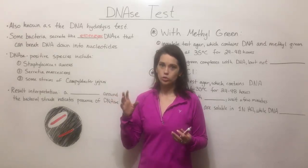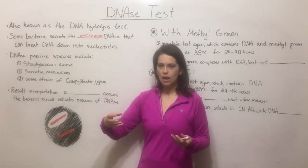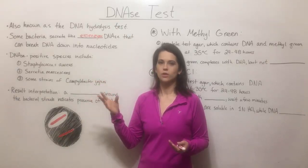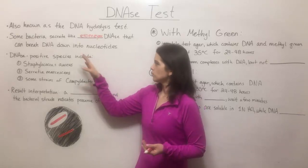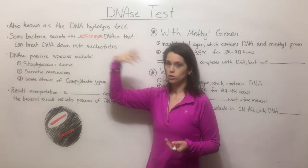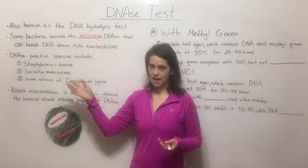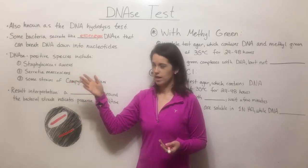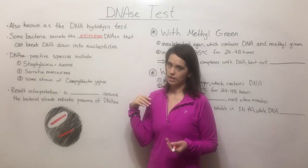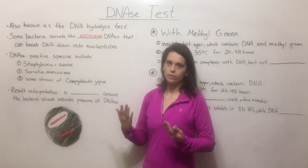DNA is typically too large to cross the membrane by itself, but there are transporter proteins for individual nucleotides. So some bacteria can produce this exoenzyme DNase, secrete it outside of themselves, where it can break down DNA that's in the environment, and then that bacteria can use their transporter proteins to bring in the resulting nucleotides and use them to replicate their own DNA.